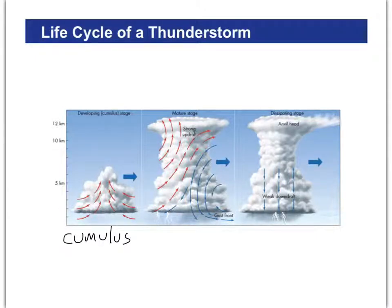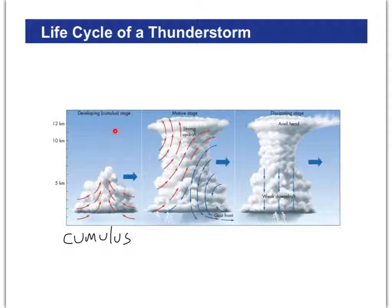Cumulus literally means pile — like if you accumulate stuff, you pile stuff up. So these are clouds that are piling up, and what's happening is air is rising so clouds are building from low to higher and higher. As the air rises, we know that it cools and condenses, and that's what actually makes the cloud build higher and higher.